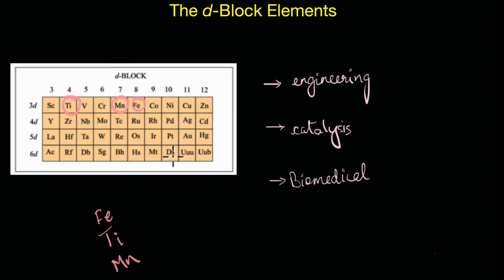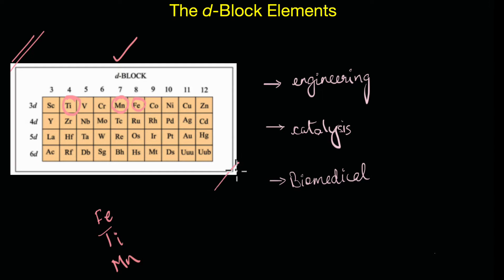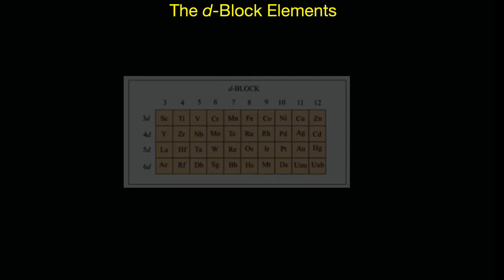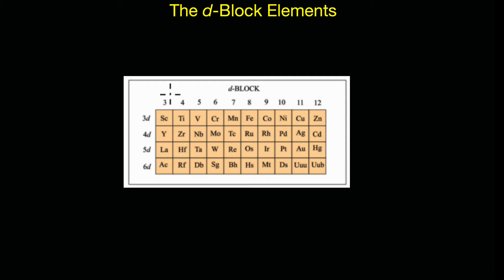To understand what makes these elements so versatile in their applications, it is important to study their chemistry. In this particular video, we will take a brief look at the position of the d-block elements and also look at some interesting nuances about their electronic configurations. The d-block spans from group 3 to group 12 and comprises four series of elements.